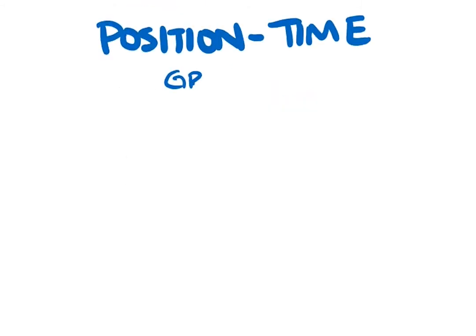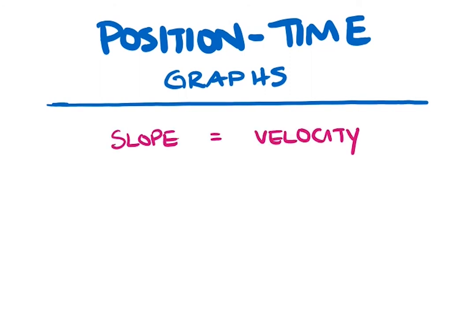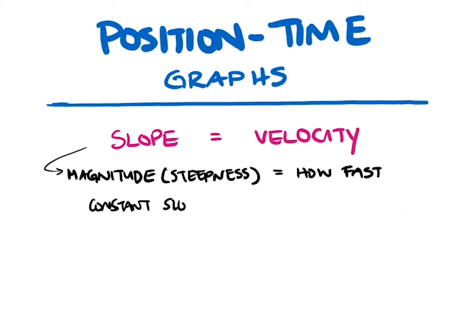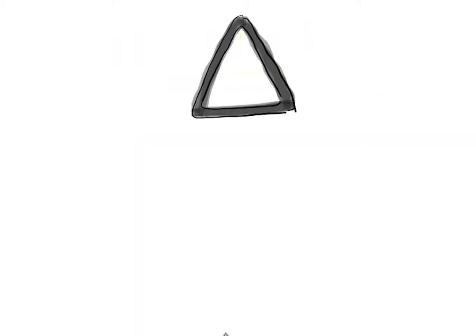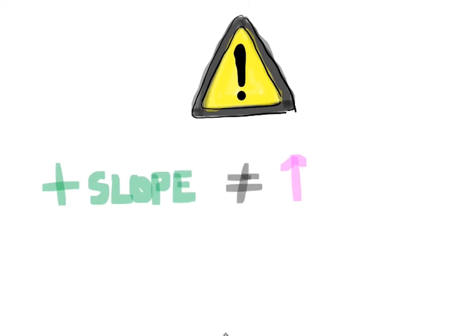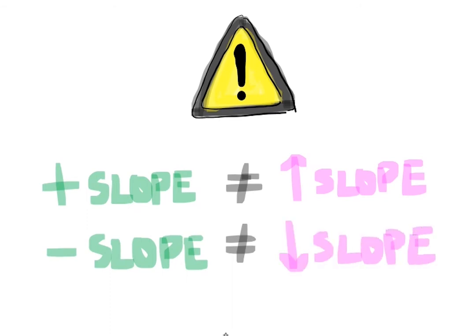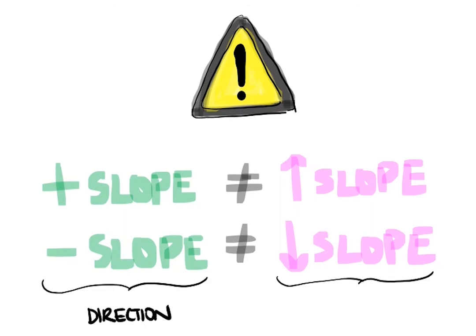Let's recap what we know about position-time graphs. Slope indicates velocity. Velocity, a vector, has magnitude and direction. The magnitude of slope — the steepness — indicates the magnitude of velocity, known as how fast. If the magnitude of slope and velocity remains constant, we graph a line. If the magnitude of slope and velocity changes by increasing or decreasing, we get a curve. The sign of the slope indicates the direction of the velocity: positive sign means positive direction, negative sign means negative direction. Be careful — positive slope and increasing slope do not mean the same thing. Likewise, negative slope and decreasing slope do not mean the same thing. The sign indicates direction, while increasing and decreasing indicates some form of acceleration.